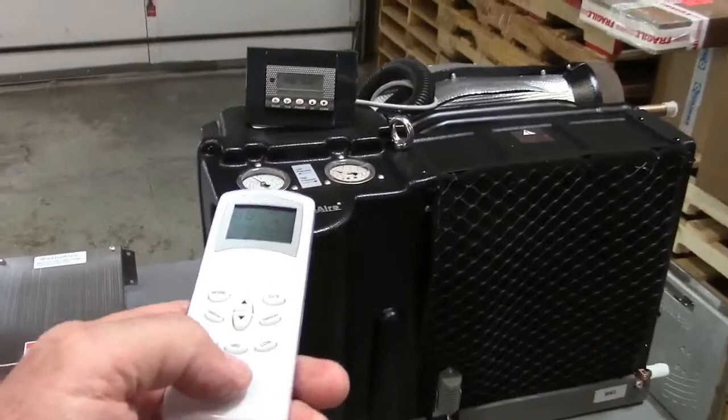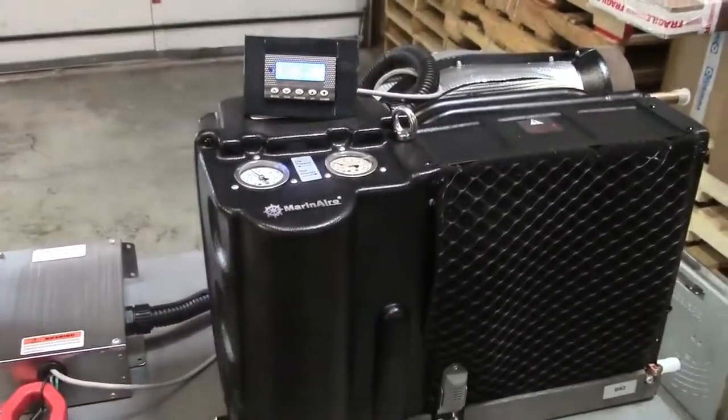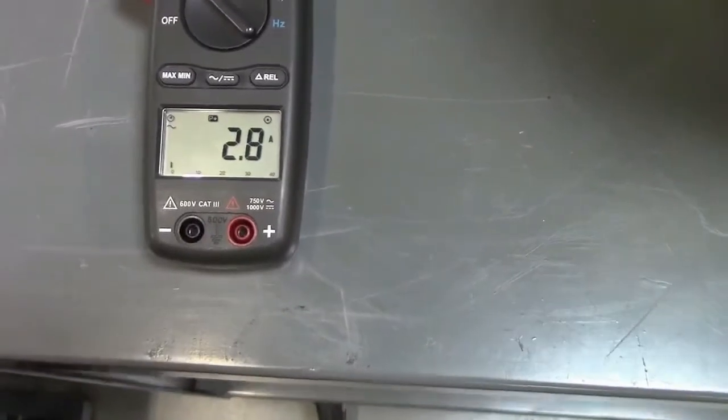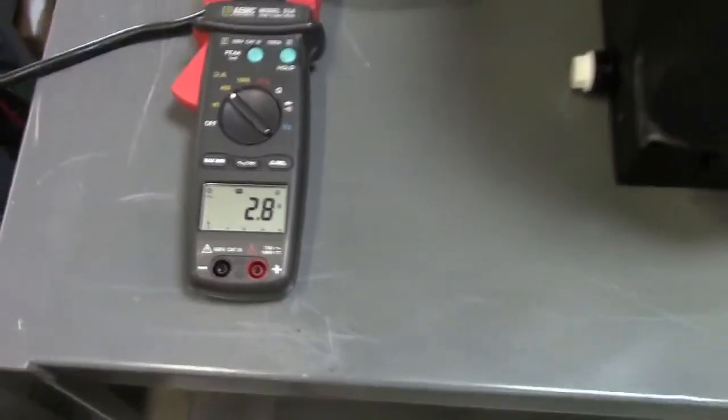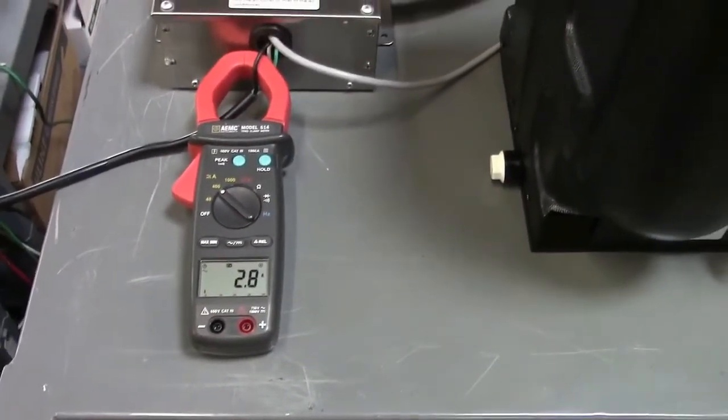So we go ahead and start up the unit. There's our display and there's our remote control. The fan starts up and immediately we've got a peak of 2.8 amps when the fan picked up.